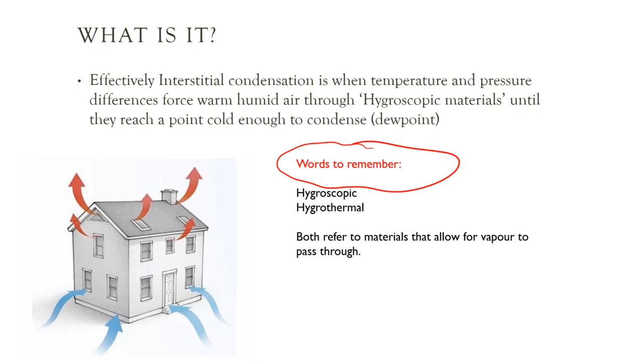Now, the hygroscopic materials - if we look at the words to remember, we've got to get into the habit of using the correct terminology, especially when it comes to the exam and more than the exam, the unit two project. One of the things that students don't do well is use the correct industry terminology. So we're talking about materials that absorb or allow vapour to pass through them.